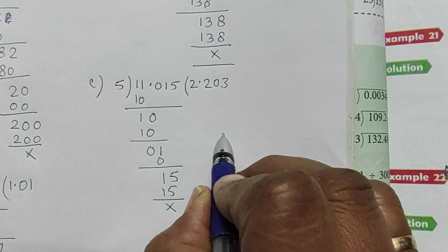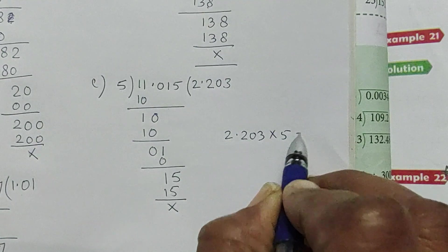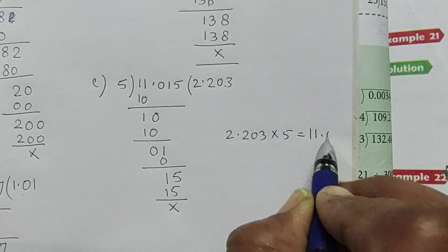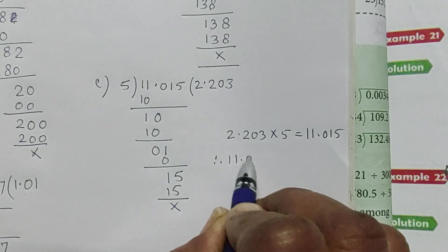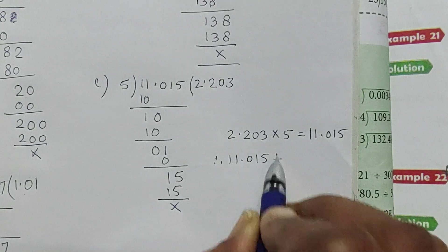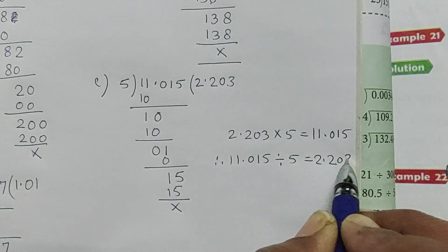Now multiplication: 2.203 multiplied by 5 is equal to 11.015. Therefore, 11.015 divided by 5 is equal to 2.203.